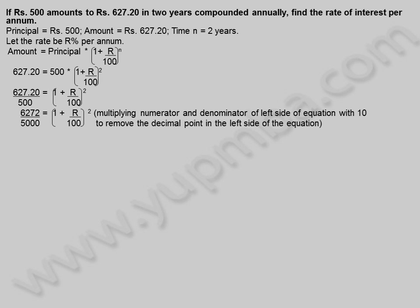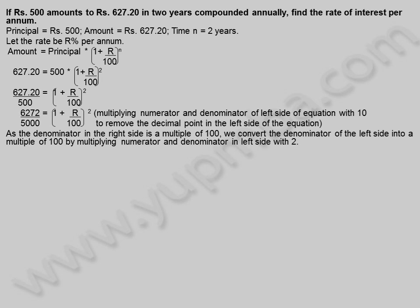Multiplying numerator and denominator of the left side of the equation with 10 to remove the decimal point. As the denominator on the right side is a multiple of 100, we convert the denominator of the left side into a multiple of 100 by multiplying numerator and denominator on the left side with 2. 12,544 by 10,000 is equal to 100 plus r divided by 100 whole square.